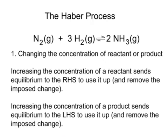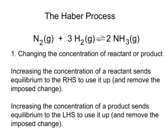Let's have a look at this in relation to the reaction to make ammonia from nitrogen and hydrogen — the Haber process. What happens if we change the concentration of a reactant or a product? If we increase the concentration of a reactant — for example, we add more nitrogen into the mixture — the equilibrium will shift to the right to use up some of the nitrogen, and in doing so it will increase the yield of ammonia. The reverse of this would be if we increase the concentration of a product — the ammonia. The equilibrium will shift to the left to use up that extra ammonia, and therefore the yield of ammonia will drop.